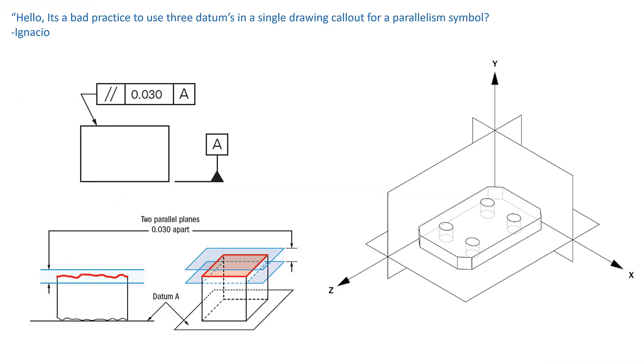Okay, so I've put an example on here of parallelism with tolerance of 0.030 in reference to datum A. So if you look down at the bottom here, you'll see that there's two parallel planes there. The blue area, that is our tolerance zone. So those two planes down there, that's our tolerance zone there for parallelism on a surface.